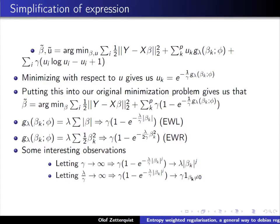If lambda divided by gamma goes to infinity, the exponential term goes to zero except when beta equals zero itself, giving gamma times an indicator function of whether beta is separated from zero—essentially counting parameters that are nonzero. So we can think of this as interpolating between the original regularization penalty and an indicator regularization.